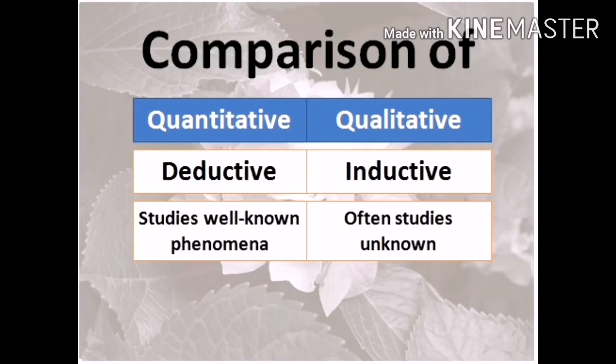Now let's compare quantitative and qualitative types of research. Deductive reasoning starts with a statement or hypothesis and then tests to see if it's true through observation. While inductive reasoning starts with observations and moves back towards generalization and theory. Meaning we make statements and hypotheses, then do an observation and check the idea. In inductive, we observe and then check the generalization of the theory.